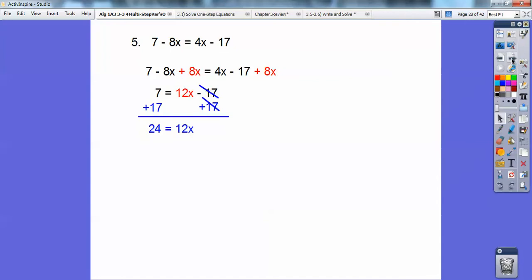Now I'm going to add 17 to both sides. Go ahead and add 17 to both sides, and you get 24 equals 12x, so x equals 2. Pretty groovy.